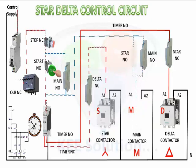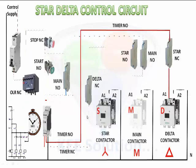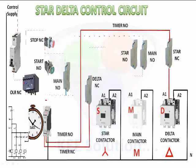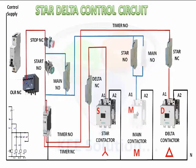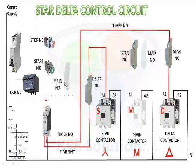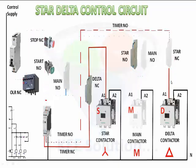Now the motor will run at star connection initially and the timer runs. When the timer completes its time, the star contactor will stop and timer NO will give power to the circuit. When the main contactor is on, the power will go through main NO and hold, and timer NO will give power to the star NC contact, which will actuate the delta contactor.